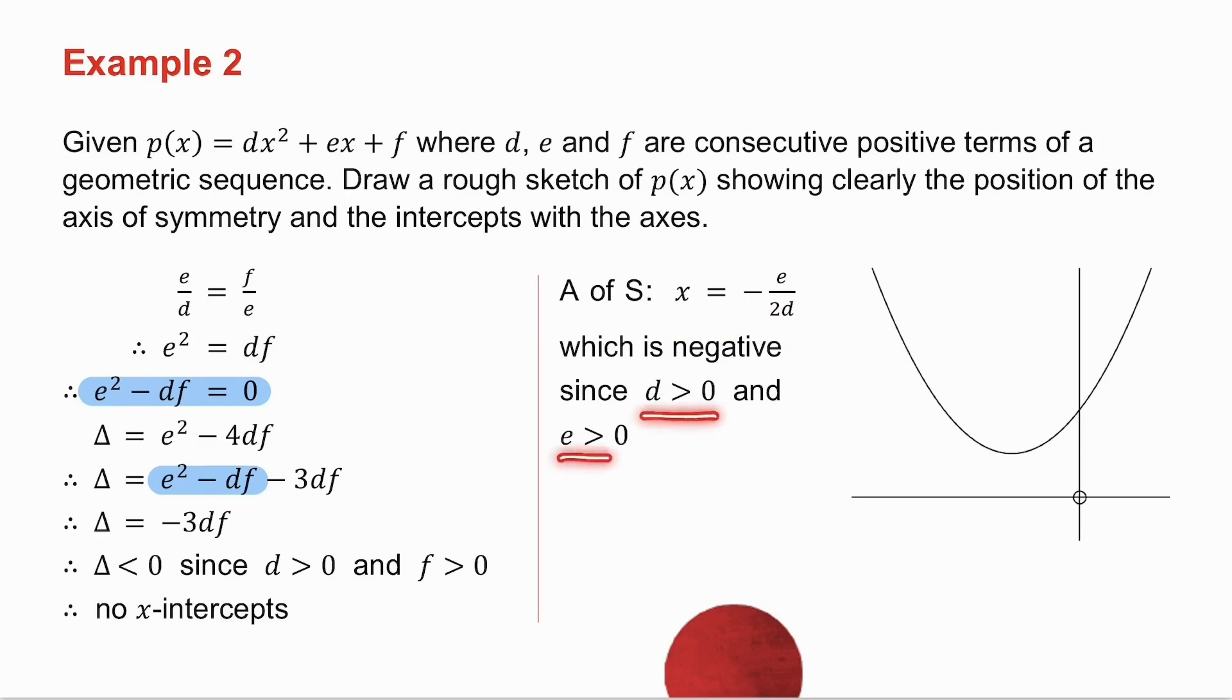D is positive. E is positive, which means my axis of symmetry is negative. So I've got a parabola whose arms go up, axis of symmetry is negative, and it never cuts the X axis. So there's my parabola.